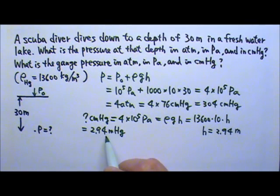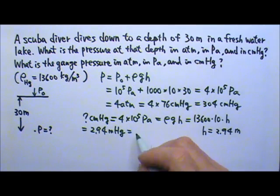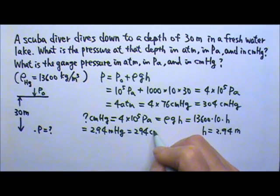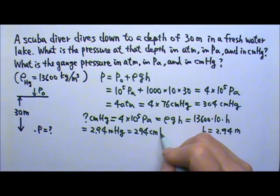This many meters tall of the mercury column produces 4 times 10⁵ pascals. Then I just have to convert this: 2.94 meters is 294 centimeters. So this will be 294 centimeters of mercury.